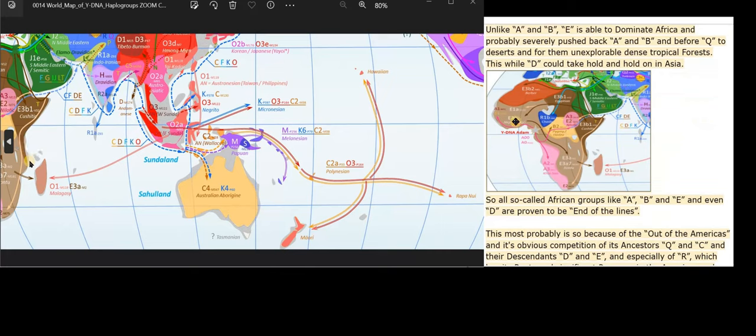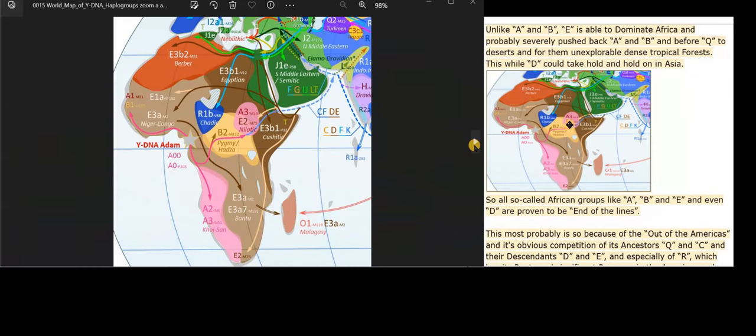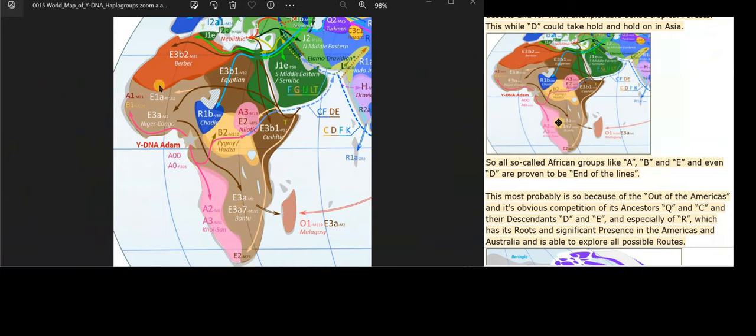E is able to dominate Africa and probably severely pushed back A and B and before Q to deserts and for them unexplorable dense tropical forests. This while D could take hold and hold on in Asia.